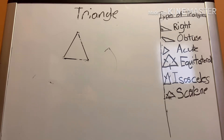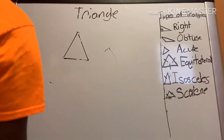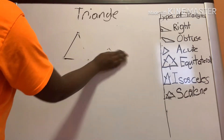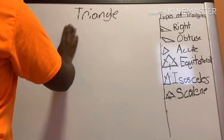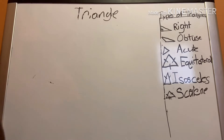An isosceles triangle is when only two sides of the triangle are the same measurement. A lot of people get isosceles and scalene mixed up, so let's go over scalene next.